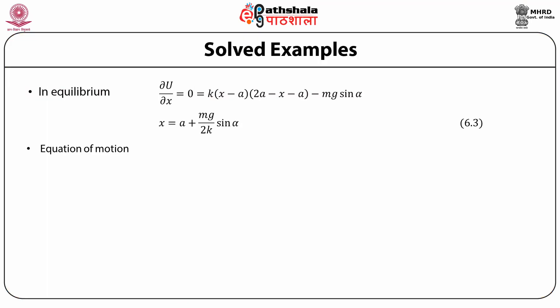The Lagrangian is just the difference between the kinetic and the potential energies. The equilibrium condition of the mass is obtained by minimizing the potential energy, that is by putting dU/dx = 0, which gives us the equilibrium position as x = a + mg/(2k) sin(alpha). Having obtained the equilibrium position, we write down the Lagrangian equation of motion: d/dt (∂L/∂x-dot) = ∂L/∂x. We have only one degree of freedom taken to be x along the inclined plane. Taking the partial derivative of L with respect to x-dot and then the time derivative, we get the equation of motion as m x-double-dot = −2k(x − a) + mg sin(alpha).